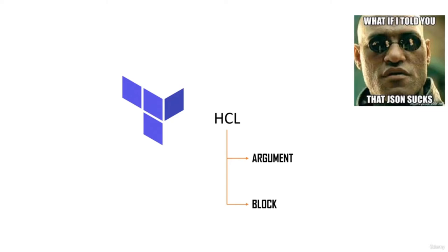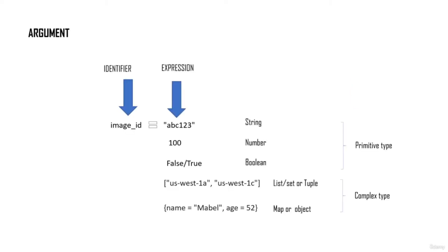Let's talk about HashiCorp Configuration Language, also known as HCL. HCL consists of arguments and blocks. You can write configuration in JSON, but I highly recommend HCL since it's much simpler to understand and learn. Arguments consist of an identifier and an expression. For example, the identifier is 'image_id' and expressions can be of the following types: string, number, boolean, or complex types such as list, tuple, map, or object.